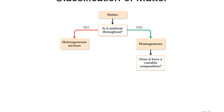Once you have something homogeneous, you check if it has variable composition. Let's take an example: a glass of salt water. You put a teaspoon of salt in water and it dissolves completely. If you look at the water, can you see any variation in salt concentration in any part of the glass? No — it looks the same whether you take a spoonful from the top or the bottom. That is a homogeneous mixture or homogeneous solution.